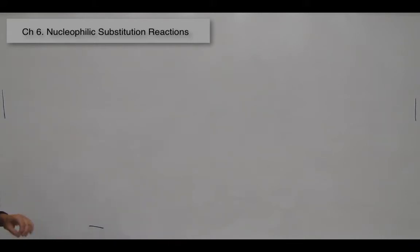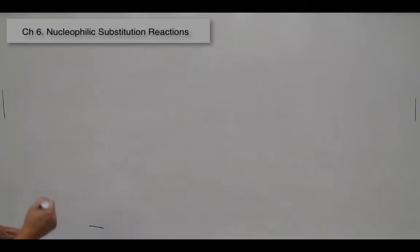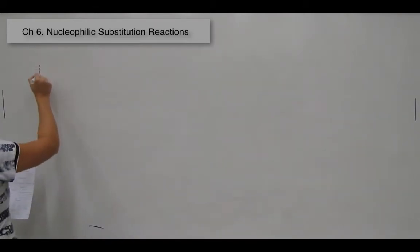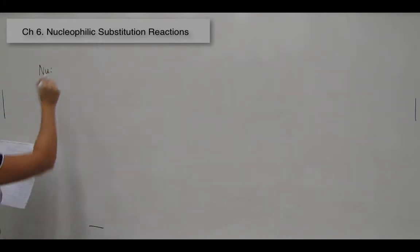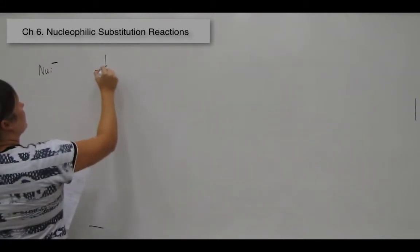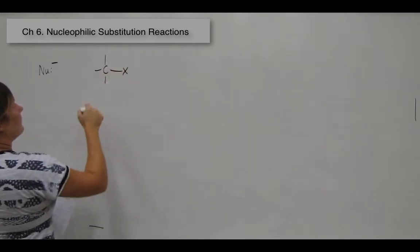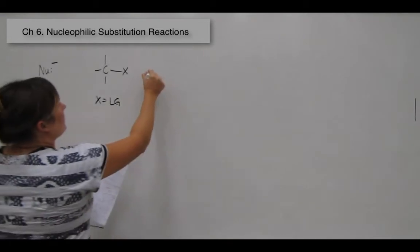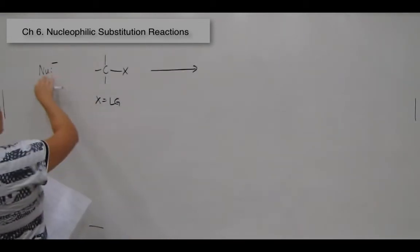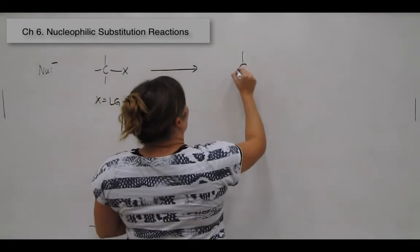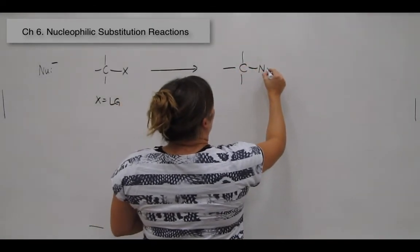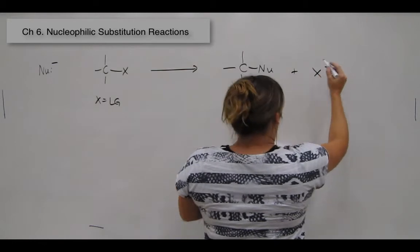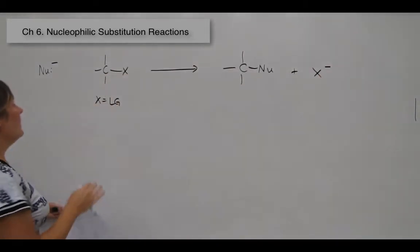We are now going to start an overview of Chapter 6, which dealt with nucleophilic substitution reactions. In this section, we have a nucleophile and our substrate, to which is attached our leaving group. You substitute the nucleophile for the leaving group.